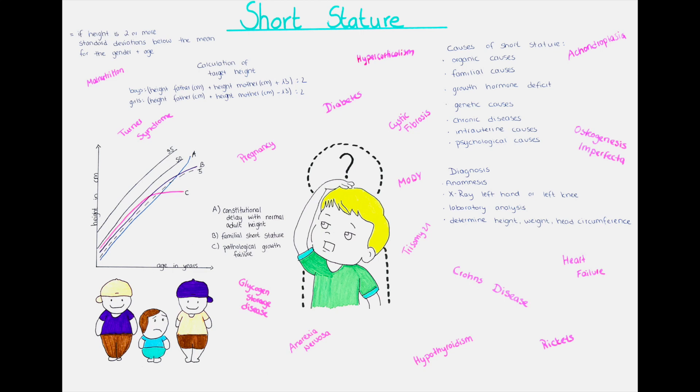Also achondroplasia is a skeletal disease which leads to a disproportionate short stature, which means that certain areas of the body, as for example the arms and legs, are more affected than for example the trunk of the body.